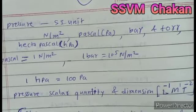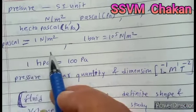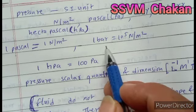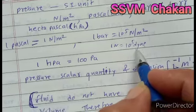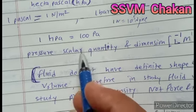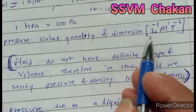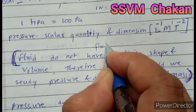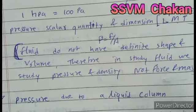Now we see the units of pressure. The SI unit of pressure is newton per meter square, pascal, bar, or torr. 1 pascal = 1 N/m². 1 bar = 10⁵ N/m². 1 hectopascal = 100 pascal. Pressure is a scalar quantity, so it does not have a direction. The dimension of pressure is M¹L⁻¹T⁻². You can calculate this dimension using the formula P = F/A — substitute the dimension of force and area.